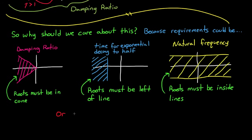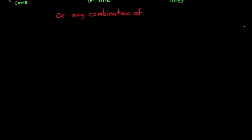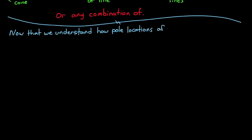And of course, more often than not, you're going to get some combination of these requirements. And so you could just build them up and determine where the poles of the system need to lie in the S-plane. So, now that we understand how pole locations affect the system, let's get back to the root locus method and our design questions.